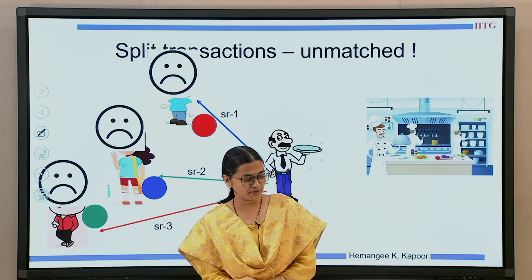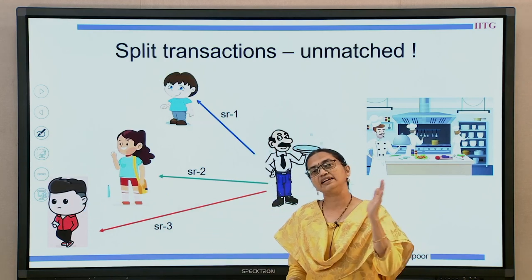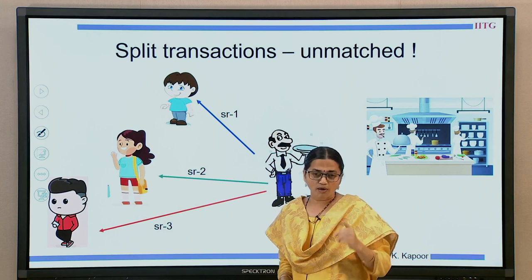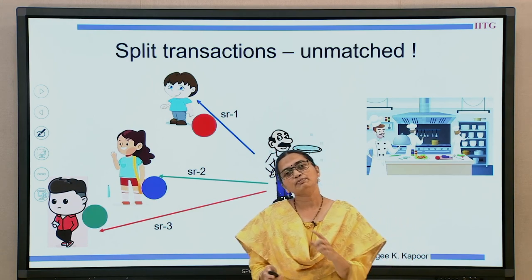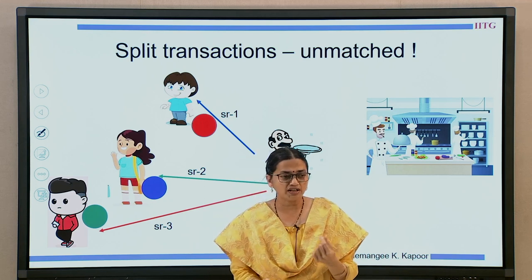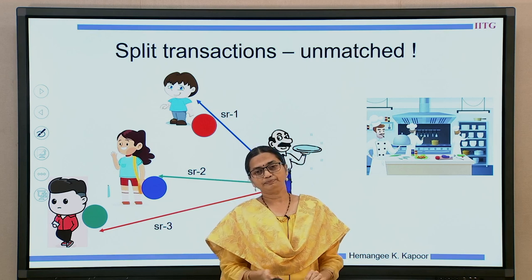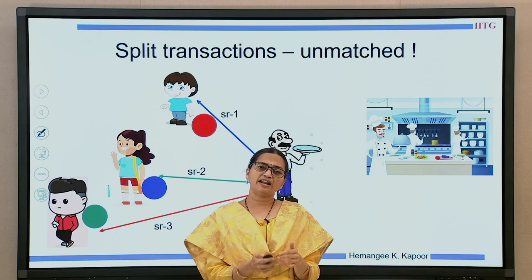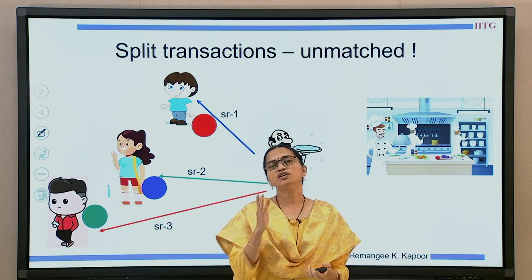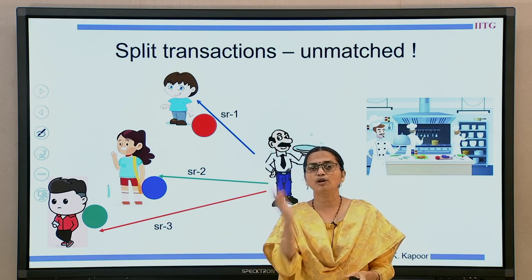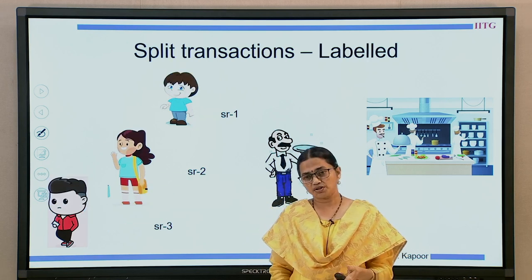Now why did this happen? All of them were happy that their orders were taken, but the problem started when they got the final answer in the wrong format. This happened because the service person had no clue which order belonged to which customer. So when I have several transactions happening in parallel, I need to somehow keep track of which answer belongs to which question.